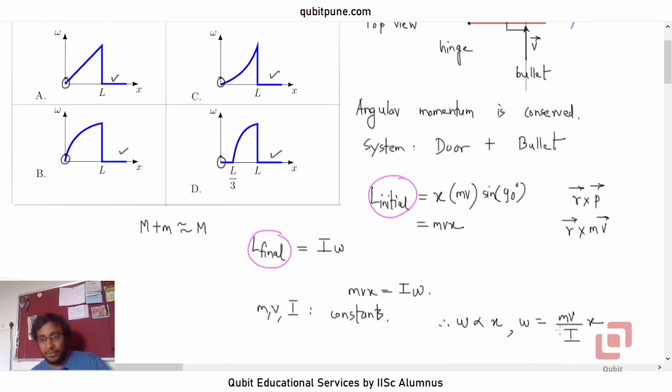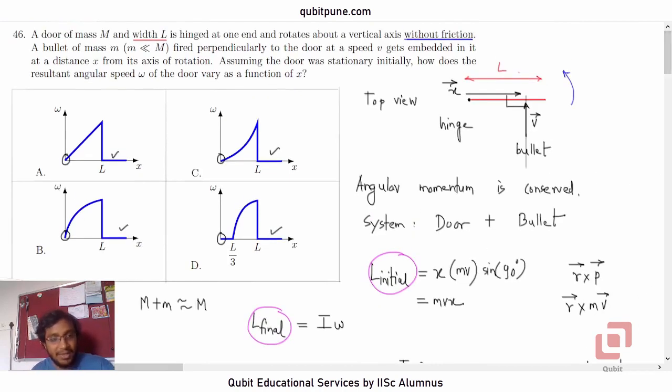What does this represent? This represents the graph of a straight line passing through origin. It is a line. Which option is right? Option A is correct. Option A.